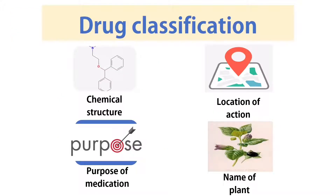Every drug needs to be classified. We classify drugs based on: the chemical structure of the drug molecule; the location of action — where the drug acts in the body; the purpose of medication — for example, cardiac glycosides are used for congestive heart failure and cardiac arrhythmias; and the name of the plant from which the drug is derived. These are four classifications for drugs.